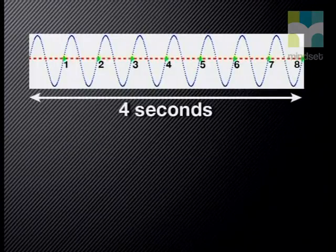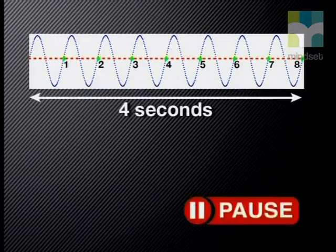Now let's find the period and frequency of waves by looking at an example. This slinky coil completes eight cycles in four seconds. Why don't you try to write down the period and the frequency for this wave? Did you try it? Let's check your answers together.